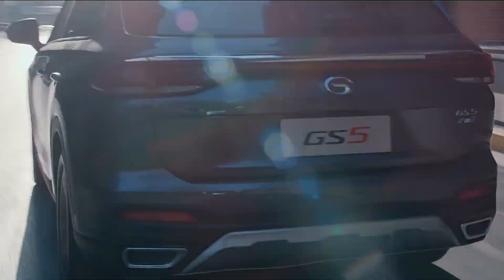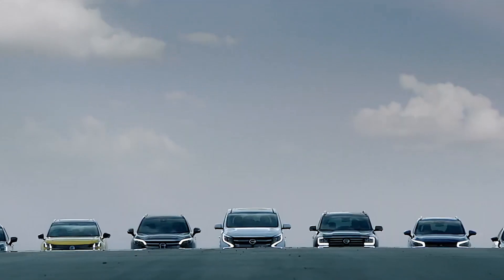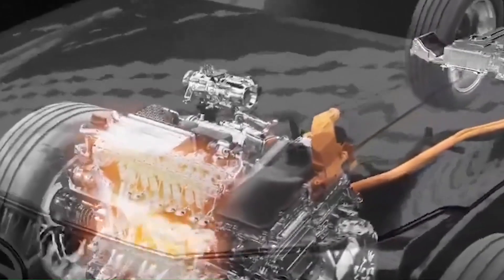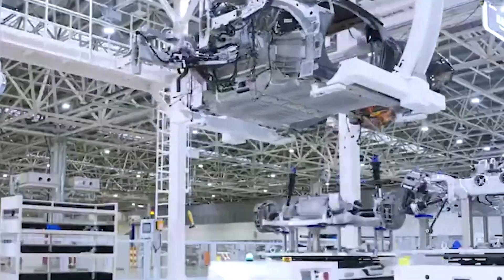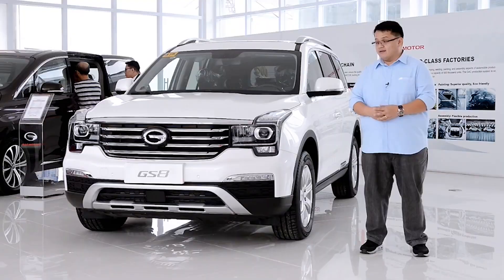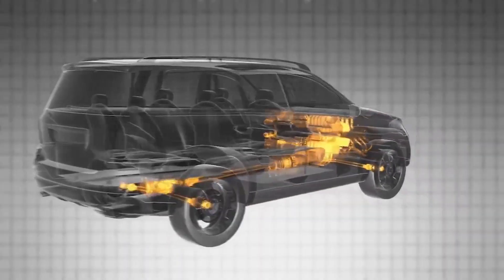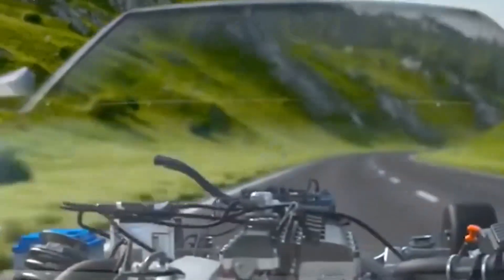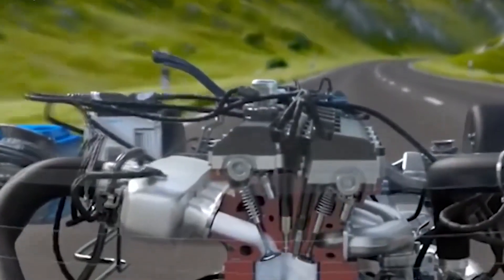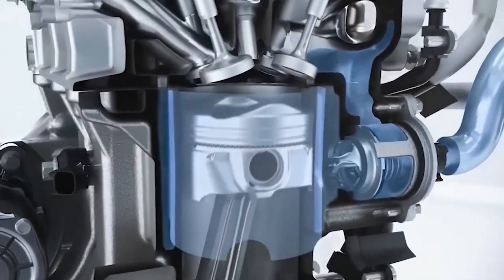As GAC and Toyota spearhead the introduction of ammonia engines into the automotive industry, they face notable hurdles. One significant obstacle is the absence of a well-established infrastructure for fueling ammonia-powered vehicles. Ammonia remains less widely available compared to conventional fuels, necessitating the creation of a robust and secure refuelling system. However, this challenge presents an opportunity for industry innovation to construct an efficient infrastructure tailored to the unique requirements of ammonia fuel.